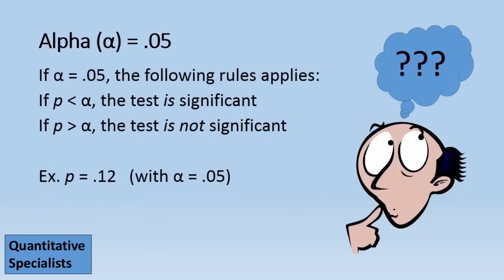Let's go ahead and take a look at another example. So if we have a p of .12 now with alpha .05, try and assess whether or not that test would be significant. It would not be significant because .12 is greater than .05.